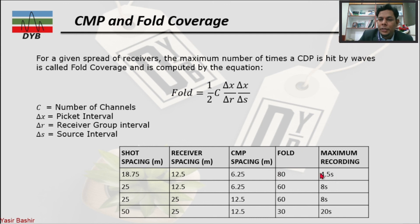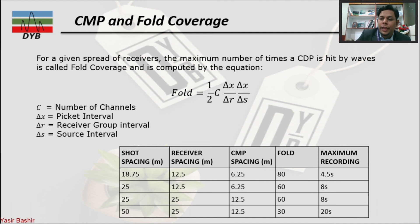If you have high fold but your time is very low, once you increase the shot spacing while receiver spacing stays the same, your CMP is also the same but the fold is less — because your shot spacing is increasing. The fold is directly proportional to the spacing of shot, receivers, and CMP. For example, with 50-meter shot spacing and receiver spacing 25 meters (half), CMP spacing is also half, giving a fold of 30 with 20 seconds of recording.